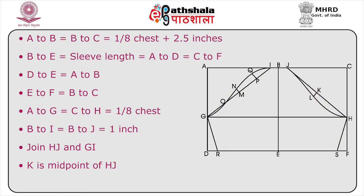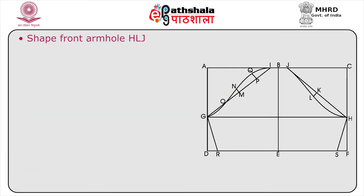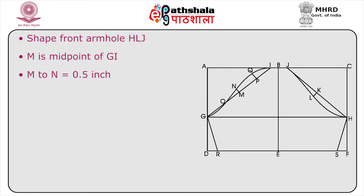K is the midpoint of H–J. K to L is 0.5 inches. Now shape the front armhole H–L–J. M is the midpoint of G–I. M to N is 0.5 inches.